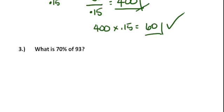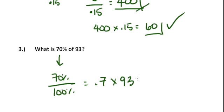Number three is like number one. What is 70% of 93? Convert this to a decimal. This gives us 0.7 times 93. And the answer is 65.1.